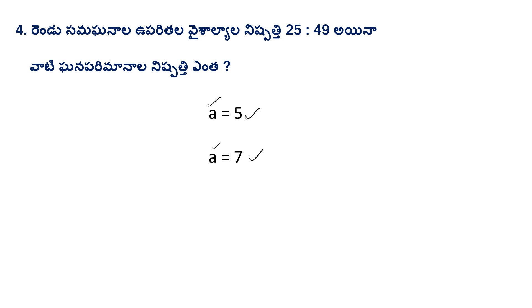Next, given total surface area = 6a². So 6A1² : 6A2² gives us the ratio. A1 square and A2 square are compared.